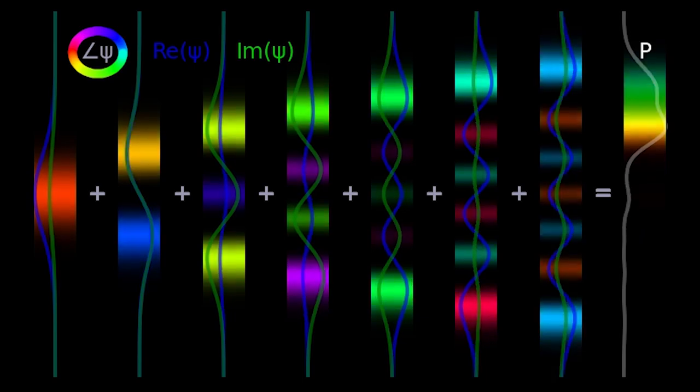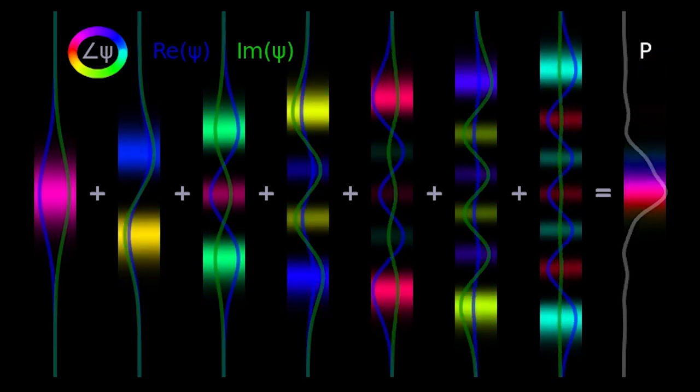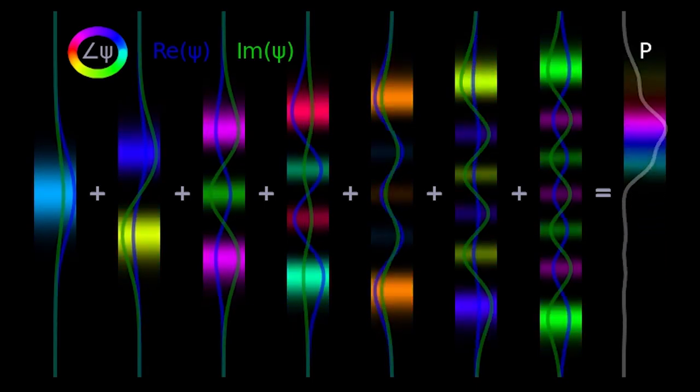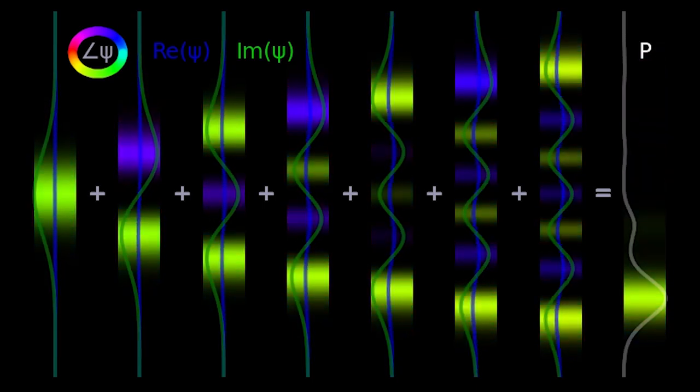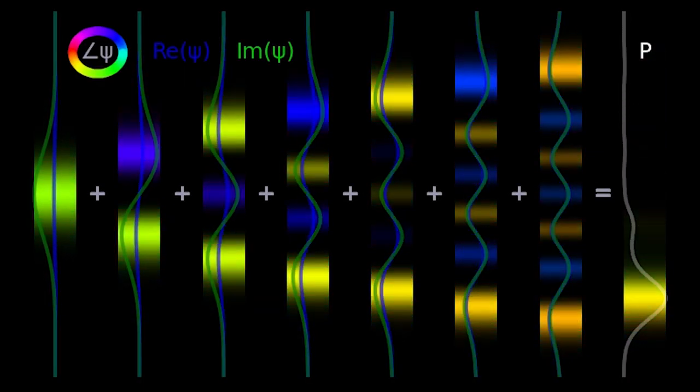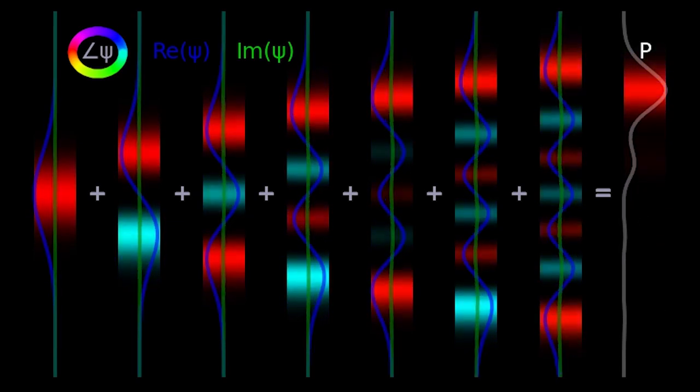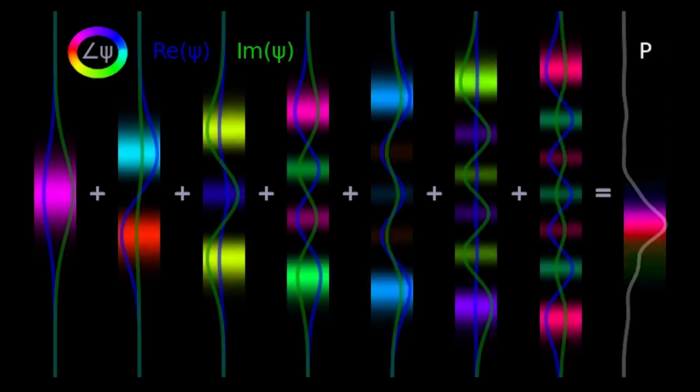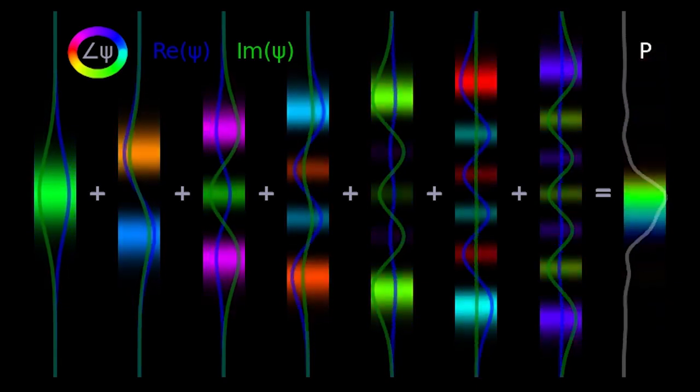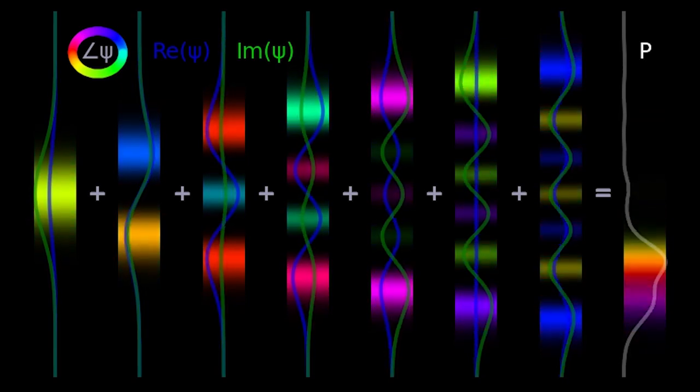Especially because you can see how the probability densities of the stationary states do not change over time. Their phase changes, but the amplitude stays constant. So the stationary states are like standing probability waves. Here I show only the first seven stationary states, but you can imagine what the higher energy ones look like. They'll have even more nodes, and the phase angles will rotate even faster, but for the most part it's the same kind of wave.